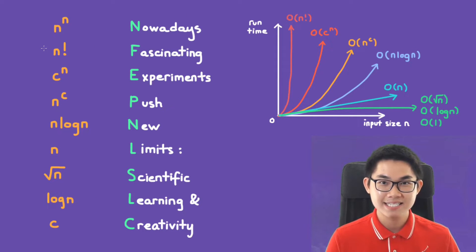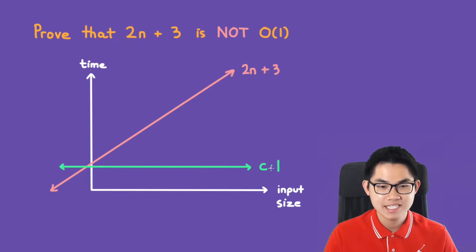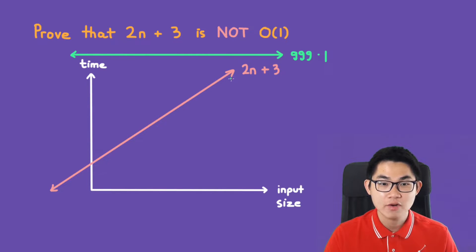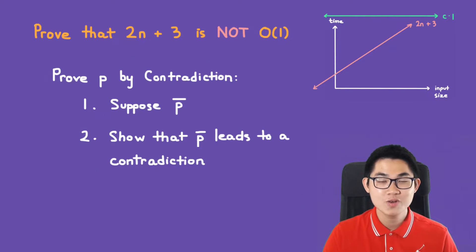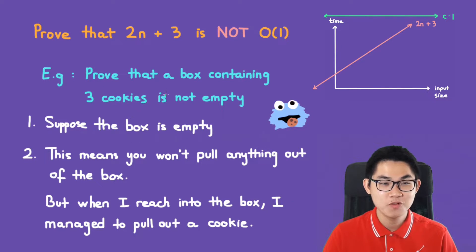Now prove that 2n plus 3 is NOT O(1). Intuitively, c times 1 is always a horizontal line. Even if we make c extremely large like 999, at some point the red function 2n plus 3 will intersect and grow faster than the constant — so 2n plus 3 cannot be O(1). To prove this formally, we use proof by contradiction: suppose statement P is true, negate it, assume the opposite, and show that leads to a contradiction.